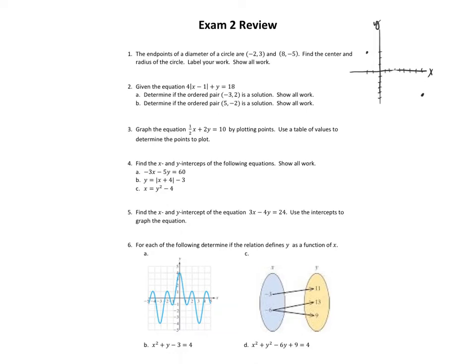So what we want to do to find the midpoint is we want to find the midpoint between these two x values. So the midpoint will be negative 2 plus 8 divided by 2 — you just average the x values — and then you are going to average the y values, and that will give you the point right in the middle. So negative 2 plus 8 is 6 over 2, which is 3. And 3 plus negative 5 is negative 2 over 2, which is negative 1. So my midpoint is at (3, negative 1). So there's the center of my circle.